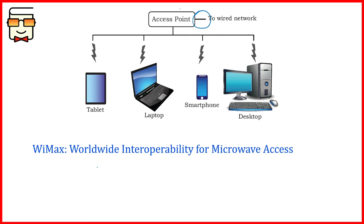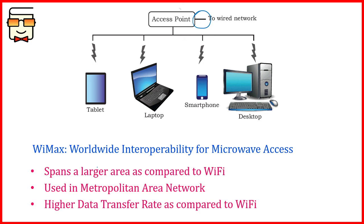The last topic is WiMAX. Its full form is Worldwide Interoperability for Microwave Access. WiMAX is essentially a larger form of Wi-Fi — it spans much larger areas. Instead of a LAN, WiMAX operates at the scale of a MAN, or metropolitan area network, extending across cities and towns. It also provides a higher data transfer rate compared to Wi-Fi. These were the basic points about WiMAX, Wi-Fi, and other wireless transmission media.